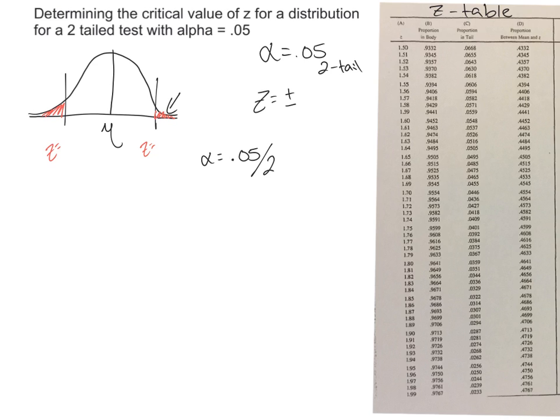And again, our critical regions are right here. I'm just going to abbreviate it with CR. So if we split the critical region in two, alpha becomes now, because 0.05 divided by 2, 0.025.